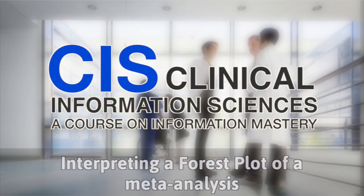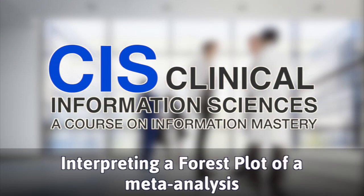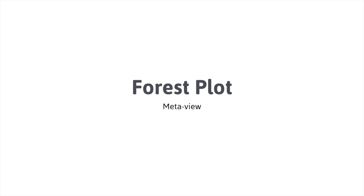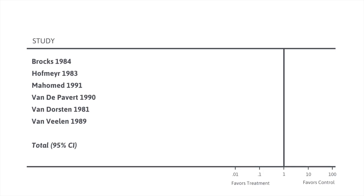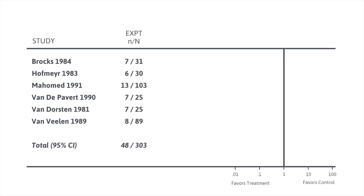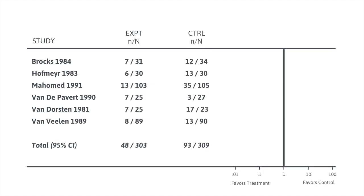A key aspect of a meta-analysis is presenting the data in a format called a forest plot, also referred to as a meta-view. On the left side are the studies that were done and the year they were performed. The next column shows the number of patients in the experiment or treatment group, and the following column shows the number of patients in the control group along with the outcome for those patients.